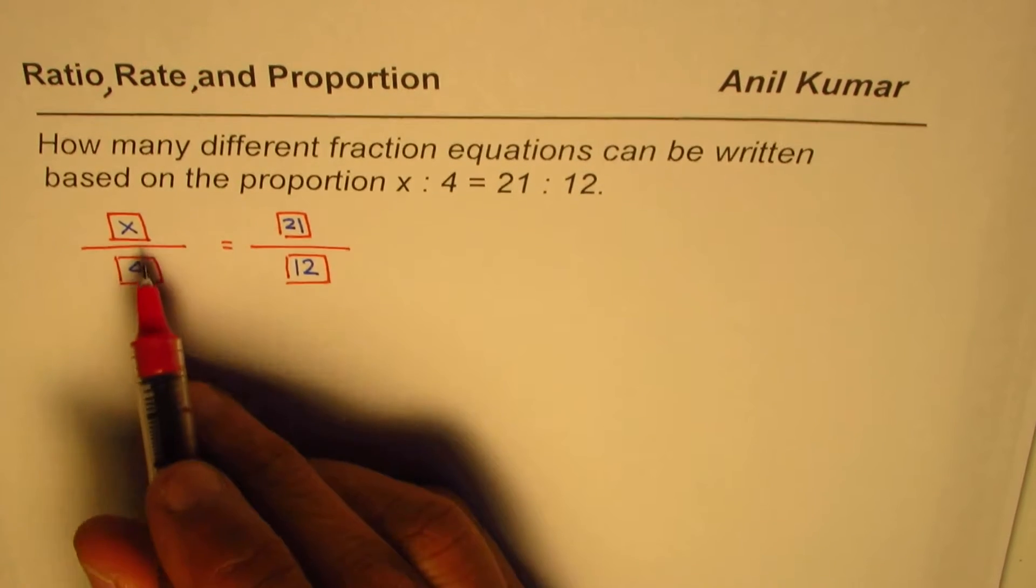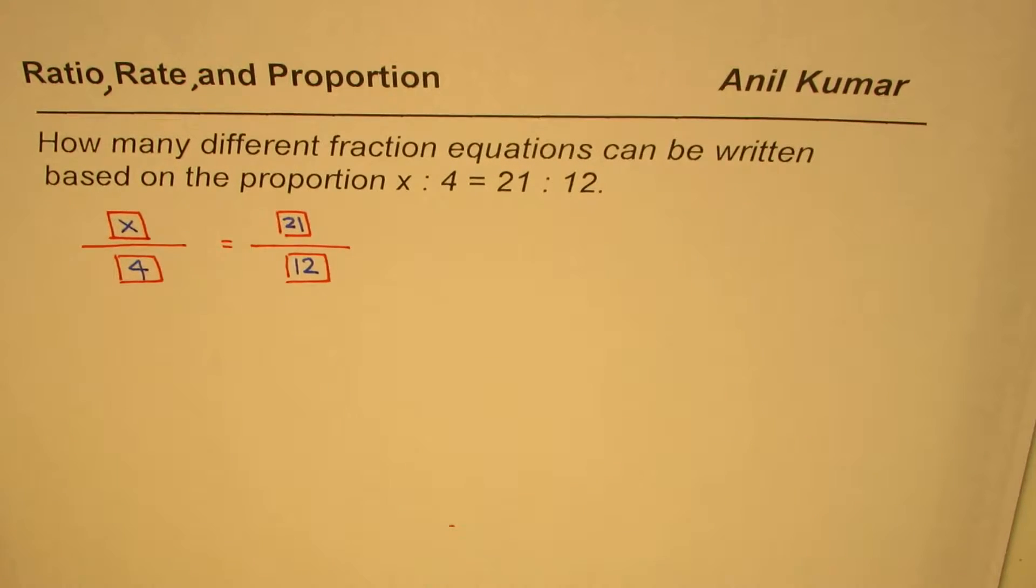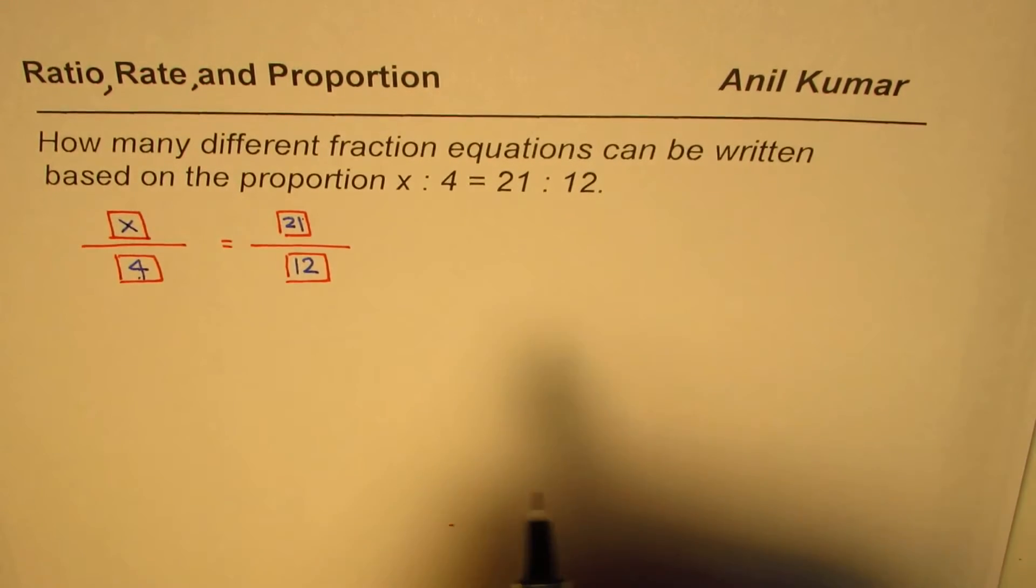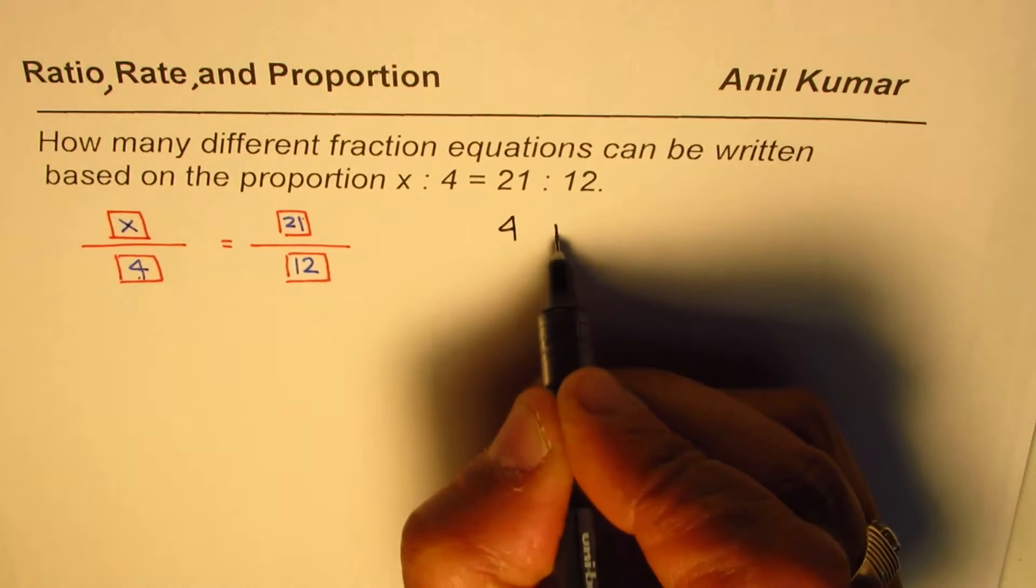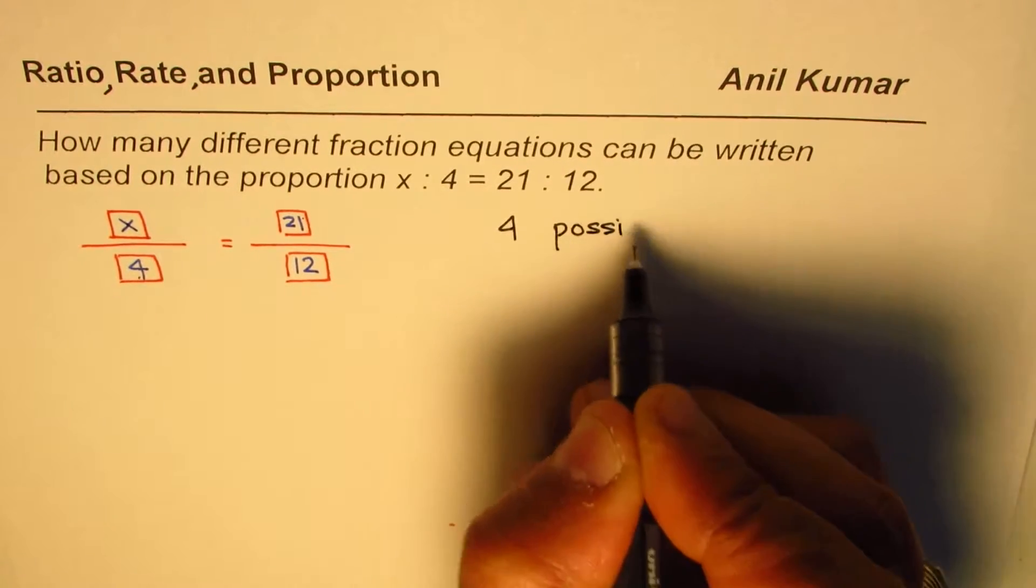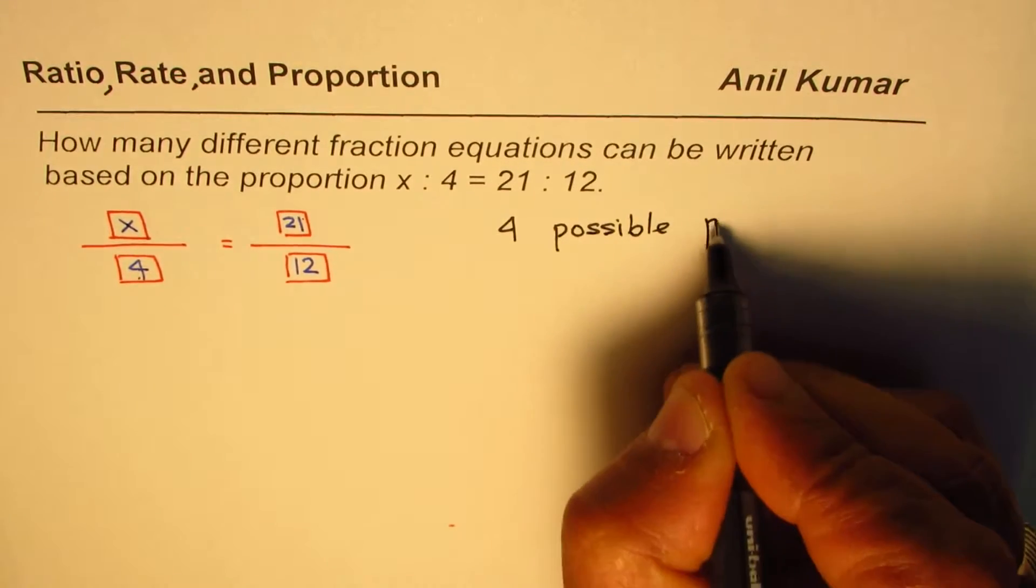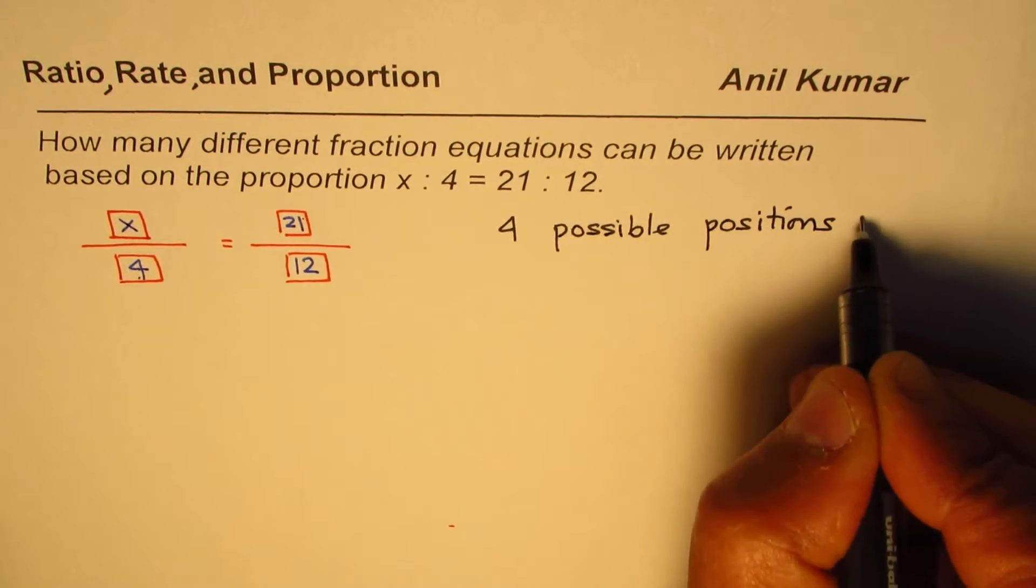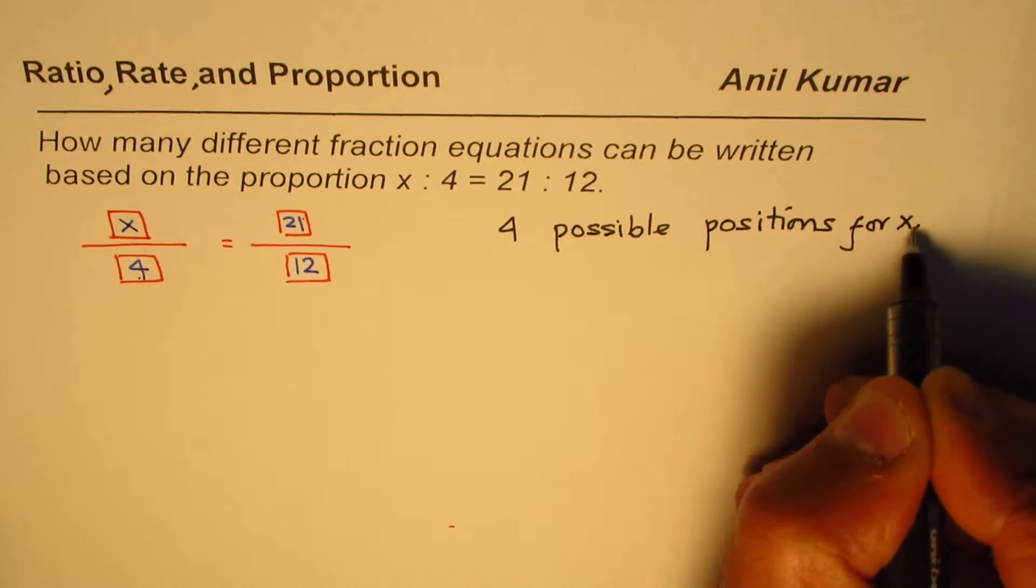So as you can see, if I have a fraction equation, how many places can I put x? I can put x here, there, so 1, 2, 3, 4. So there are 4 possible positions for x. Is that okay?